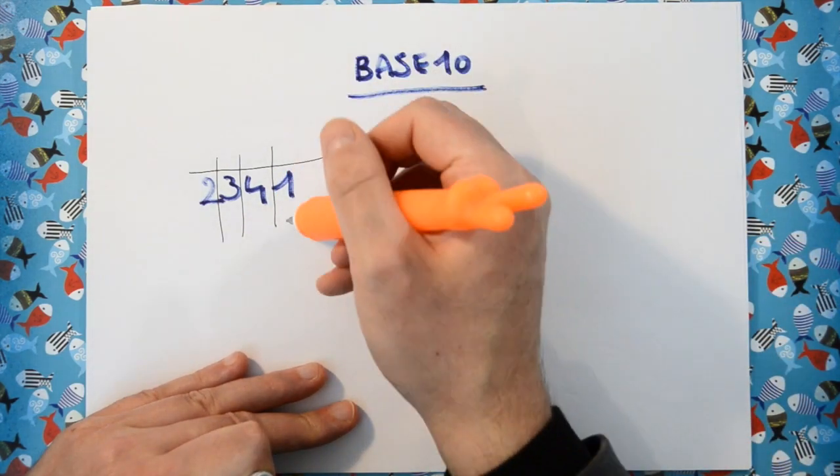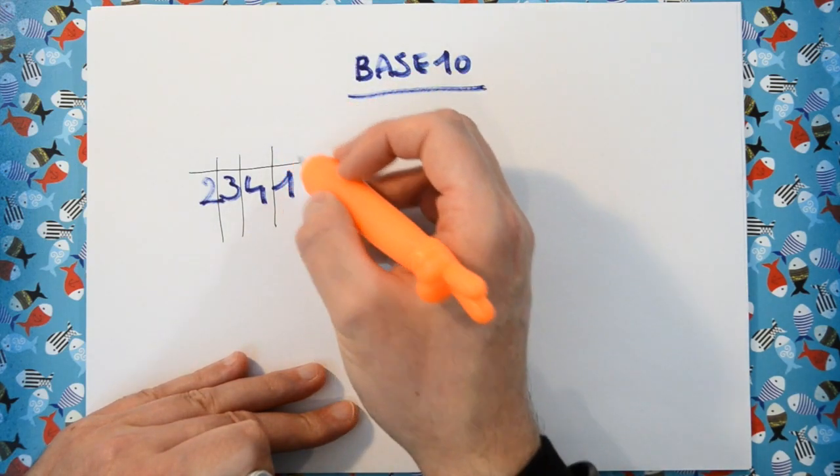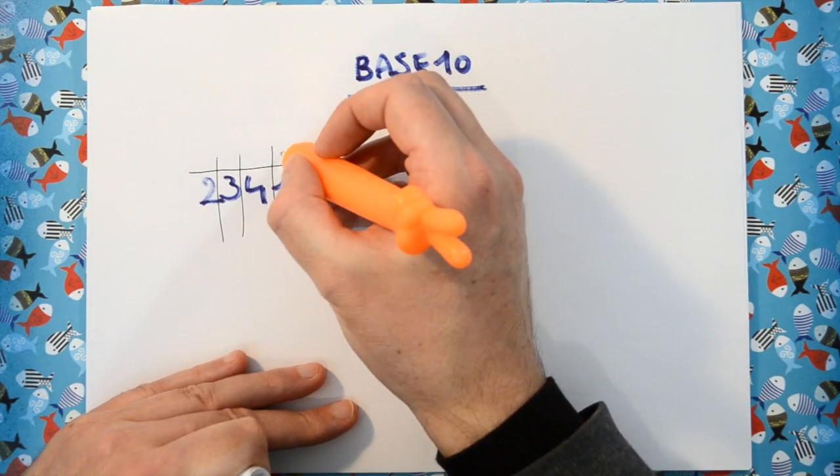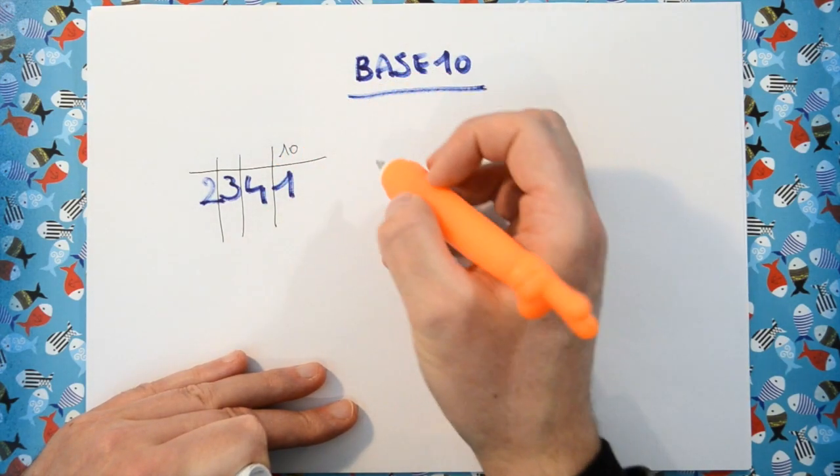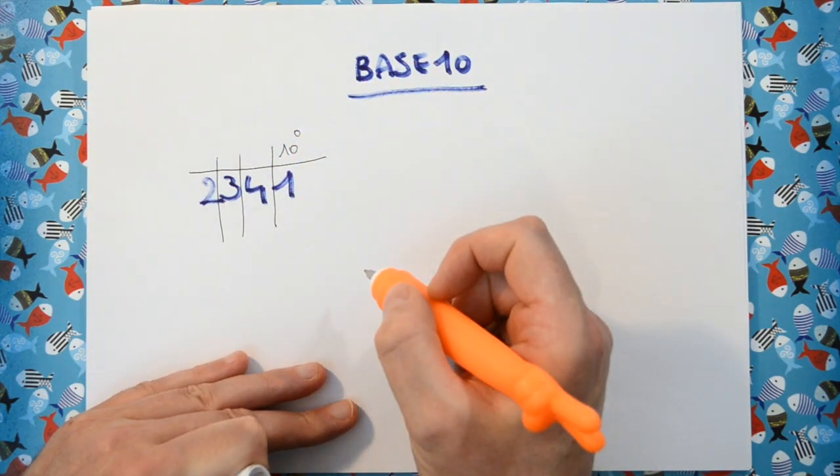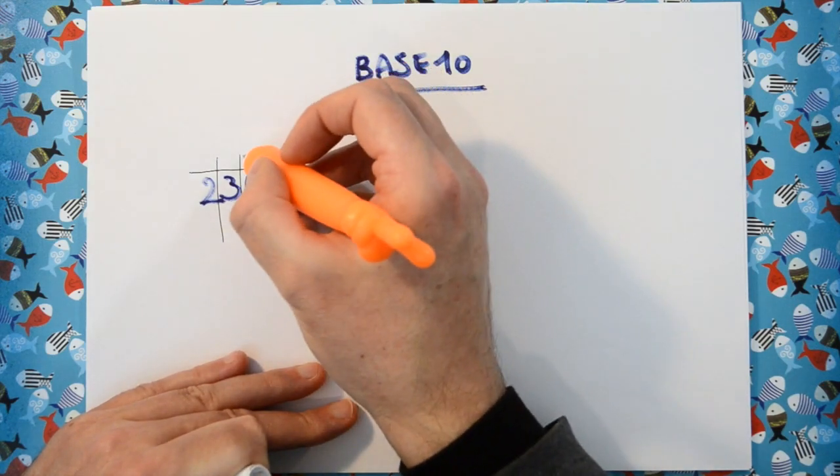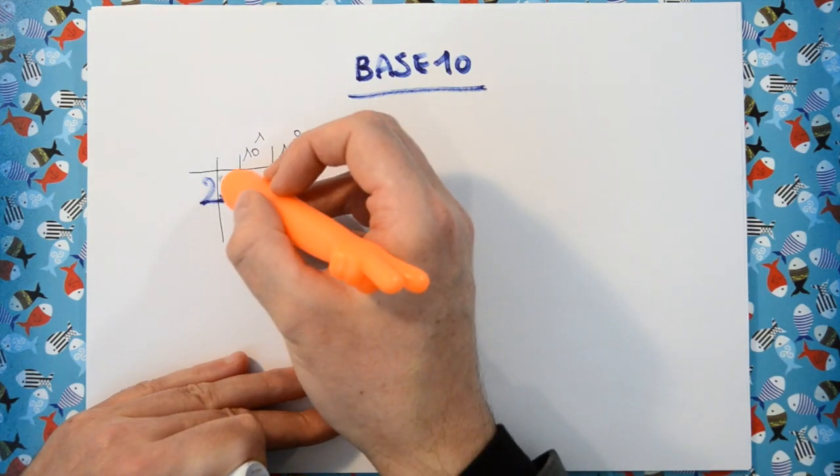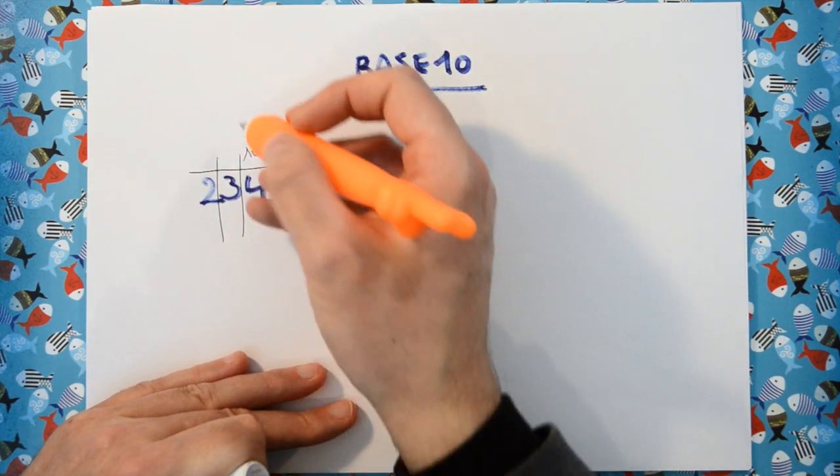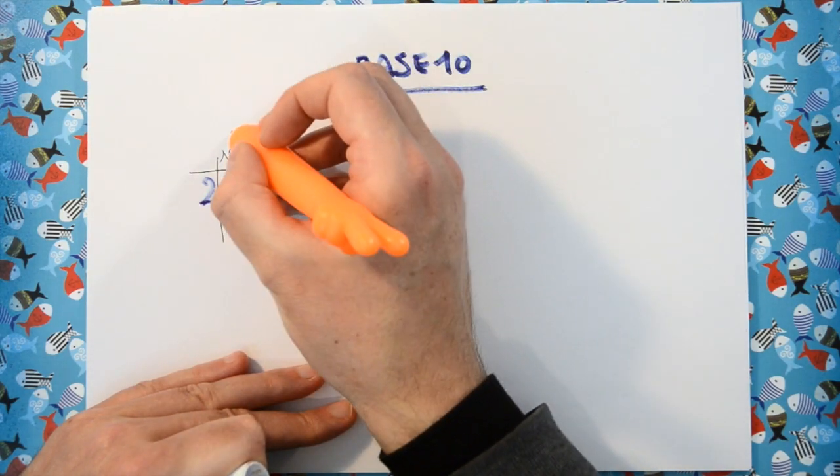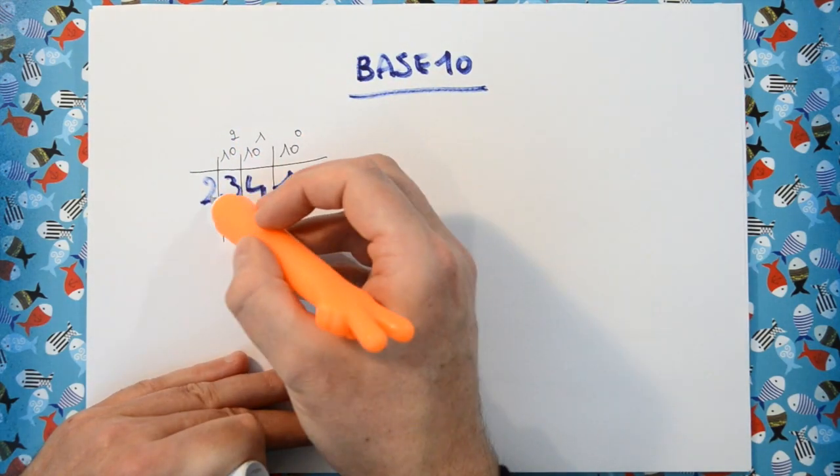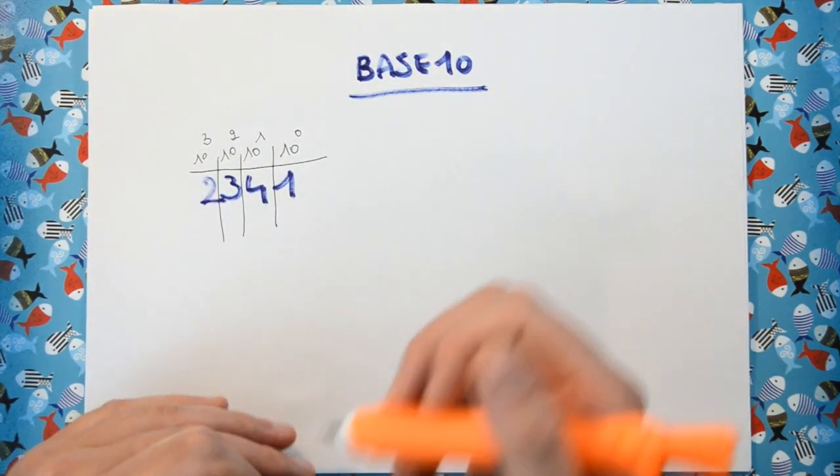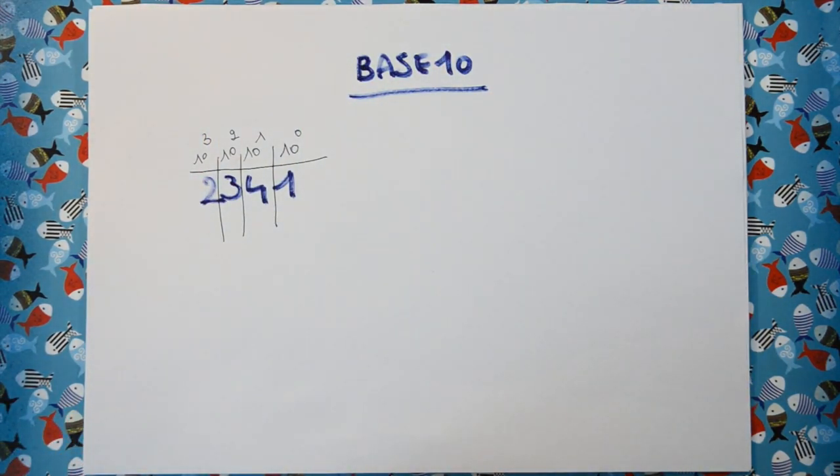So the first column in base 10 stands for how many times we have 10 to the power of 0. The second one stands for how many times we have 10 to the power of 1. The third one stands for how many times we have 10 to the power of 2, and the fourth one stands for how many times we have 10 to the power of 3.